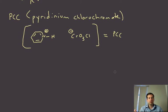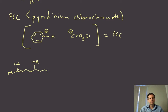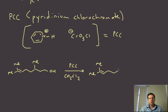PCC is a fairly useful reagent because it's soluble in organic solvents and works generally for both primary and secondary alcohols. For example, taking a primary alcohol with PCC in methylene chloride as solvent — which dissolves both the alcohol and PCC — gives the oxidation product, an aldehyde.